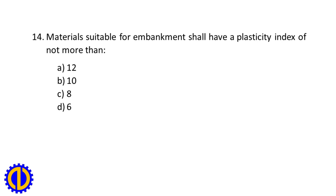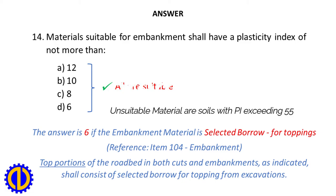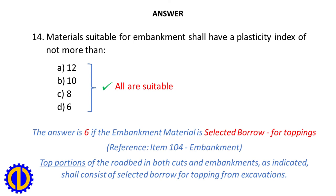Question 14. Materials suitable for embankment shall have a plasticity index of not more than: A. 12. B. 10. C. 8. D. 6. Answer: All are suitable. Note: the answer is 6 if the embankment material is selected borrow for toppings. Unsuitable materials are soils with plasticity index exceeding 55. Reference: Item 104, Embankment. Top portions of the roadbed in both cuts and embankments shall consist of selected borrow for topping from excavations.